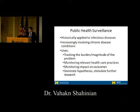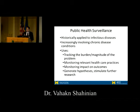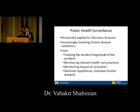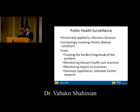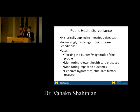A few more words about public health surveillance: historically, it's applied to infectious disease — that's the largest focus for the Centers for Disease Control. But increasingly, the idea is being applied to chronic disease conditions like diabetes and kidney disease. Some of the uses for monitoring a chronic disease condition include tracking the burden of disease, understanding the magnitude of the problem, monitoring how care is being delivered, and tracking whether changes lead to improvement in outcomes. To a large extent, it's also important to generate hypotheses and stimulate further research, since tracking patterns of disease can give insights about underlying causes.